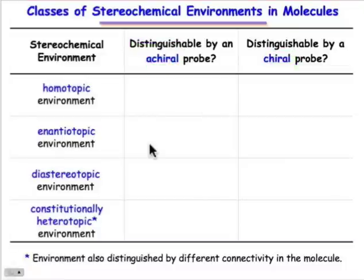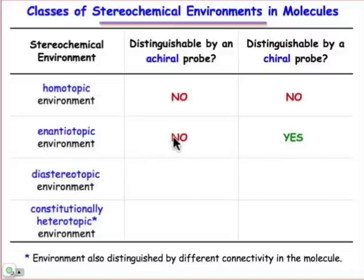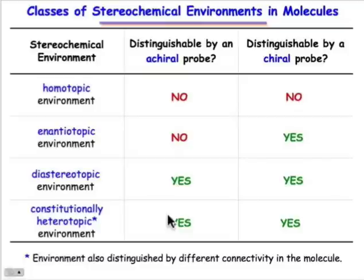Homotopic environments can never be distinguished, whether we're using a chiral or an achiral probe. However, enantiotopic environments can't be distinguished if we're using an achiral probe like an aqueous solution or an NMR spectrometer, but they could be distinguished if those groups are being probed by a chiral source — say, putting a molecule in an enzyme active site. In the case of diastereotopic and constitutionally heterotopic groups, those stereochemical environments are always distinguishable, whether we're using a chiral or an achiral probe.